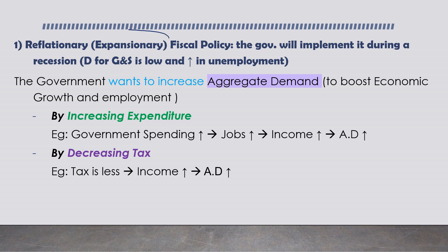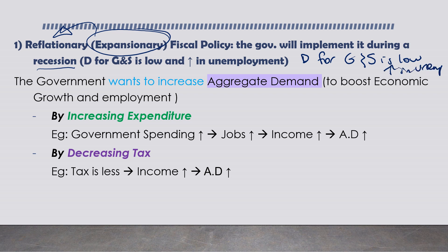Another name for expansionary fiscal policy is reflationary. The government implements it during a recession because the demand for goods and services is low, leading to an increase in unemployment. The government wants to increase aggregate demand to boost economic growth and employment.